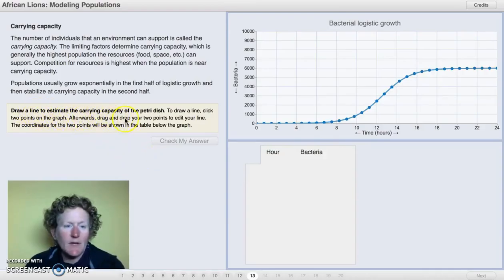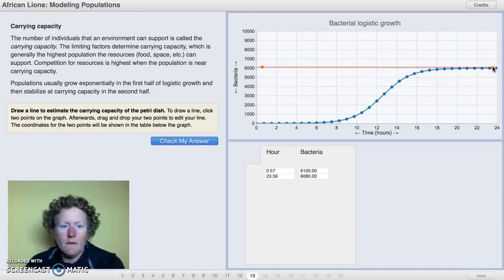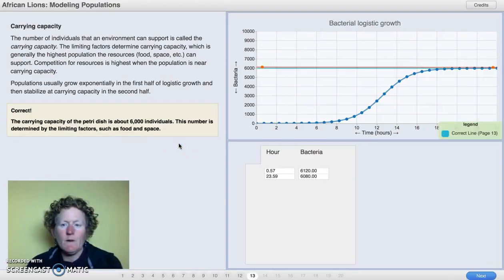Here we're going to draw a line to estimate the carrying capacity of the petri dish. To draw a line, we're going to click two points on the graph. Afterwards, drag and drop your two points to edit your line. The coordinates for the two points in the table will be shown below. I think it's right around here. So I'm going to draw a line from here over to here. And we'll check my answer. Lo and behold, I was correct. The carrying capacity of the petri dish is about 6,000 bacteria, limited by food and space.